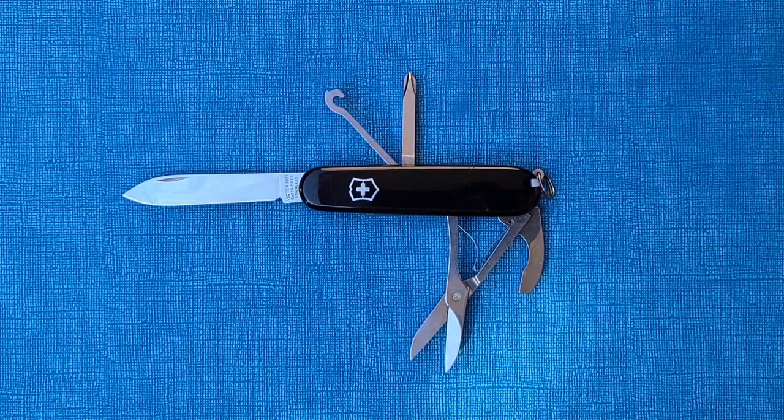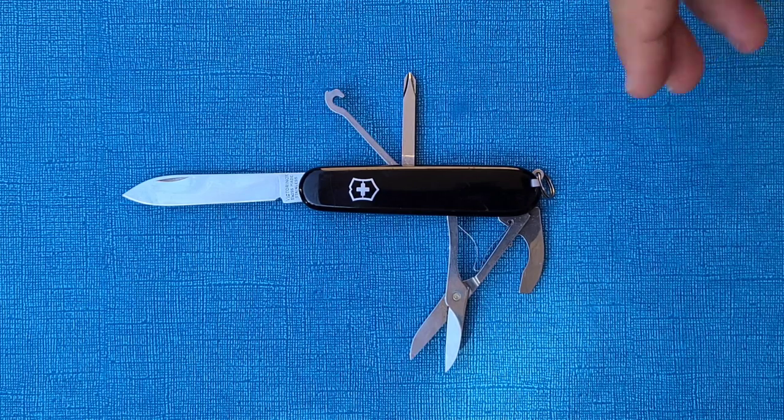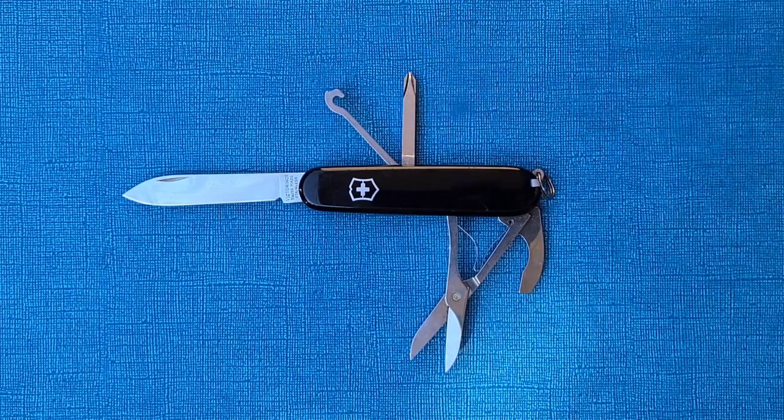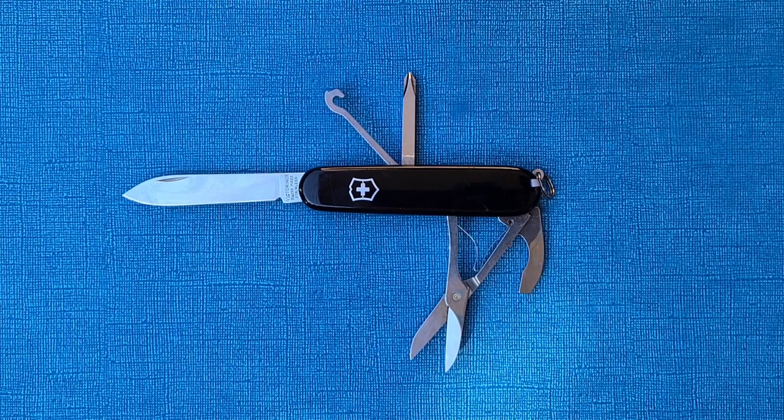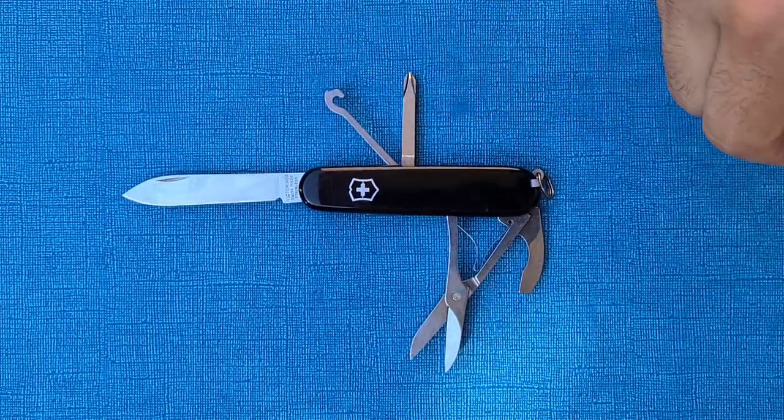And I think it's best exemplified by this modified tool right here. This is a Victorinox Compact, but instead of a corkscrew, which everyone needs a corkscrew, right? Everyone? We have a Phillips.